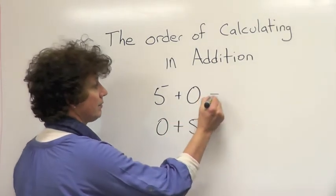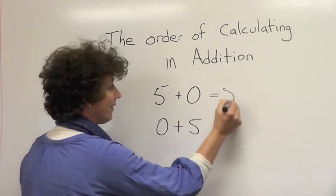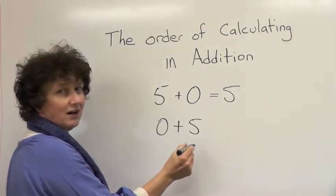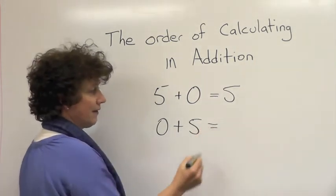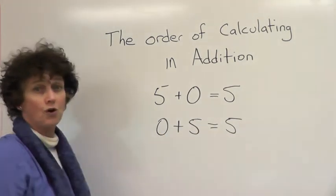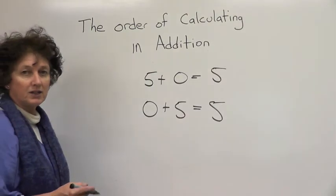So let's have a look at both of these sums. Five plus zero equals five. Zero plus five equals five. Same answer, just a different order of adding.